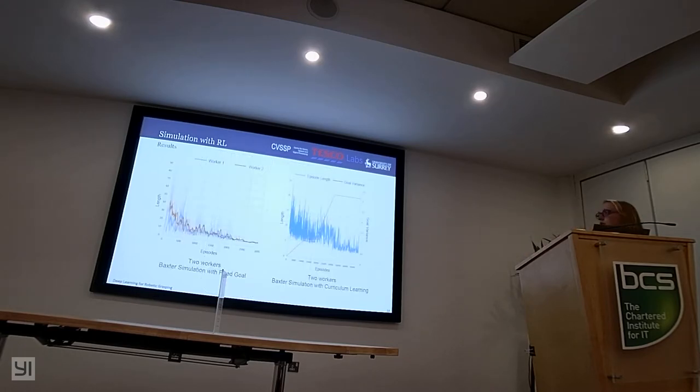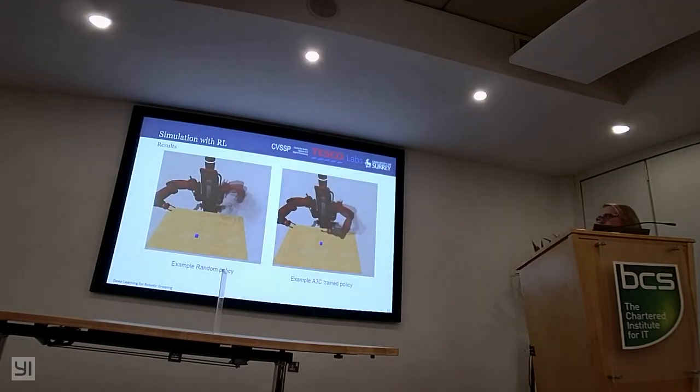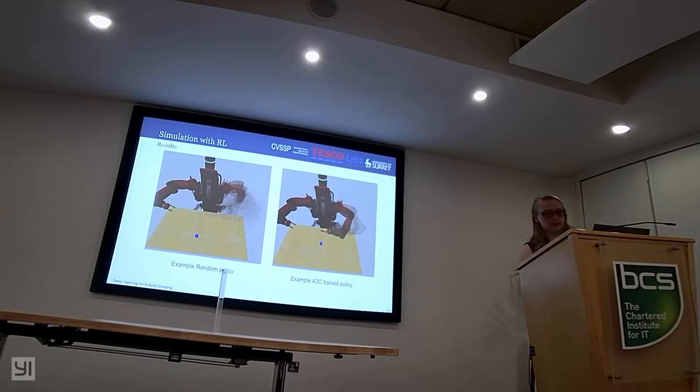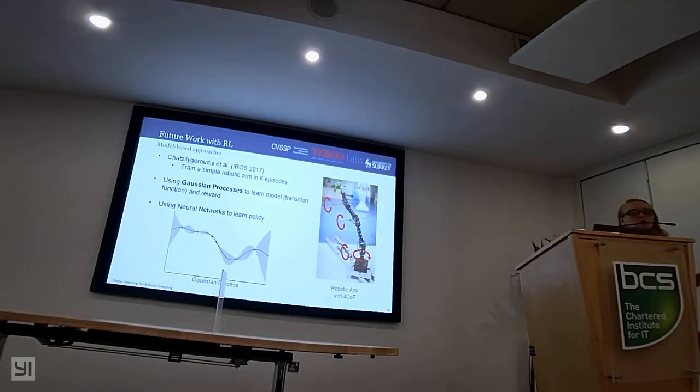We started looking at some work from IROS in 2017, and they managed to implement a method that trained a simple robotic arm, four degrees of freedom, to move from a static position to a target in just six episodes, so just six real life examples, and it was able to do it perfectly. This uses Gaussian processes to learn the transition model and also the reward function, and then it uses a neural network with a Gaussian process to learn the policy. It works very well, mainly because of the Gaussian process's ability to model complex systems with a small amount of data, but it only works on a system with a static start point and a static goal point, which is not really up to what we need.